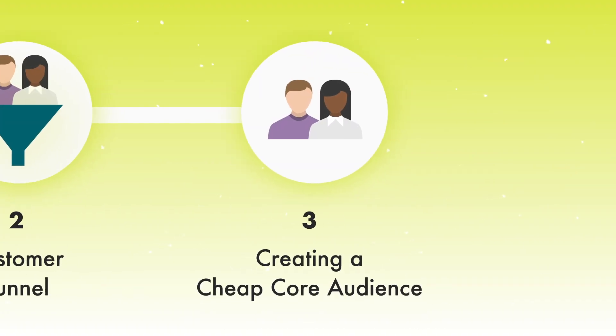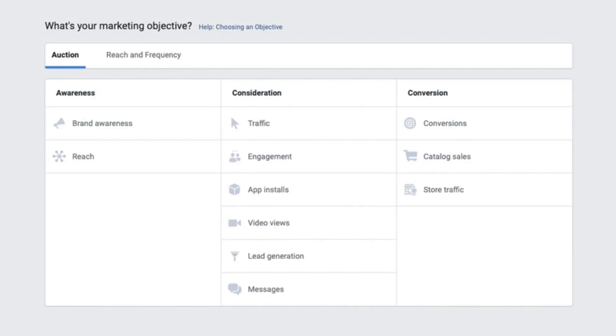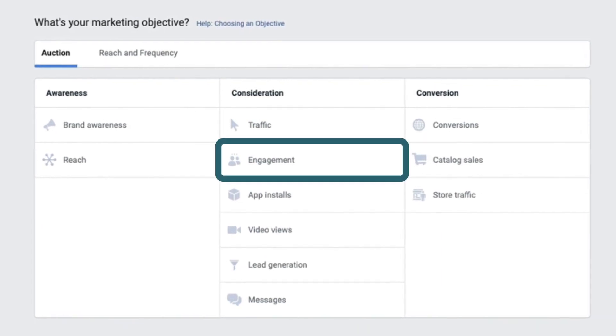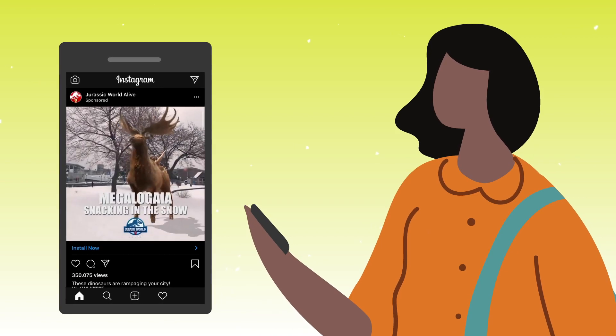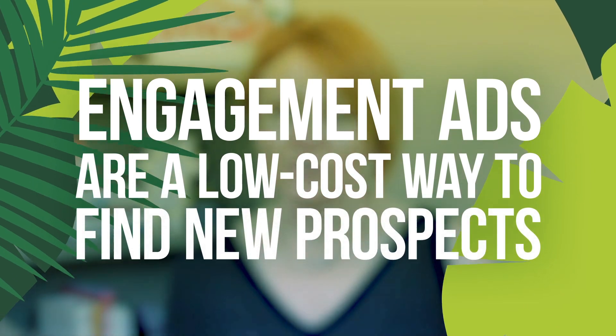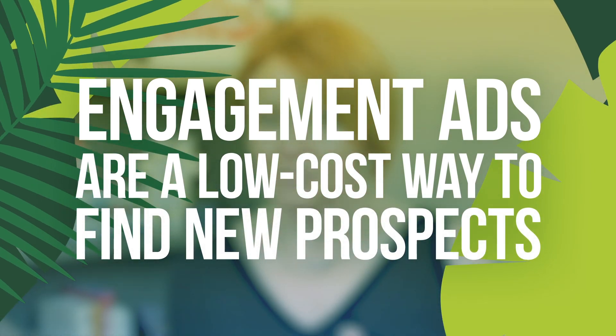Now that you know why conversion ad types are so expensive, let's talk about some ways to get to that core audience for a lot less money. When you set up your campaigns, instead of choosing conversion, choose something with a cheaper cost. My favorite way is to choose engagement. Engagement audiences are much easier for Instagram to grow, scale, and find people — you're not asking it to find people that will leave Instagram, let alone someone that's going to buy as soon as they see your ad. Engagement ads are a great, low-cost way for Instagram to find people that are interested in your brand.